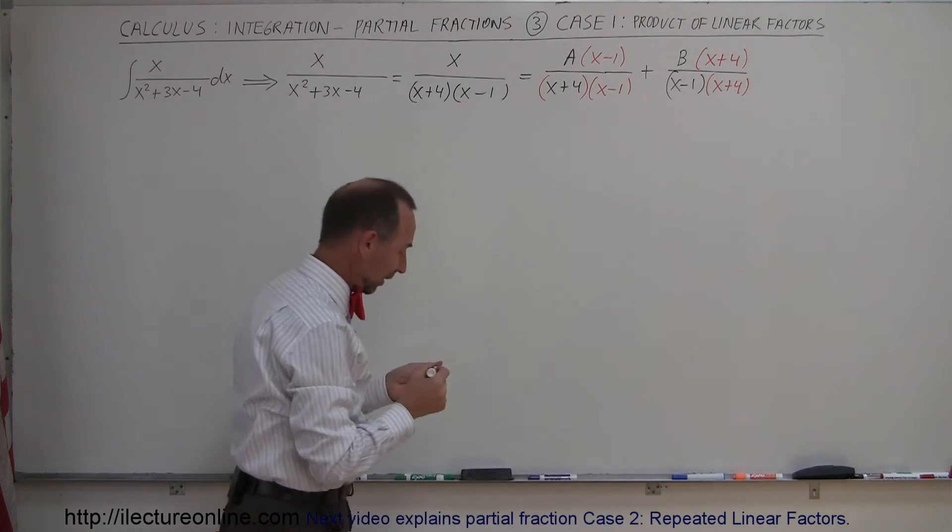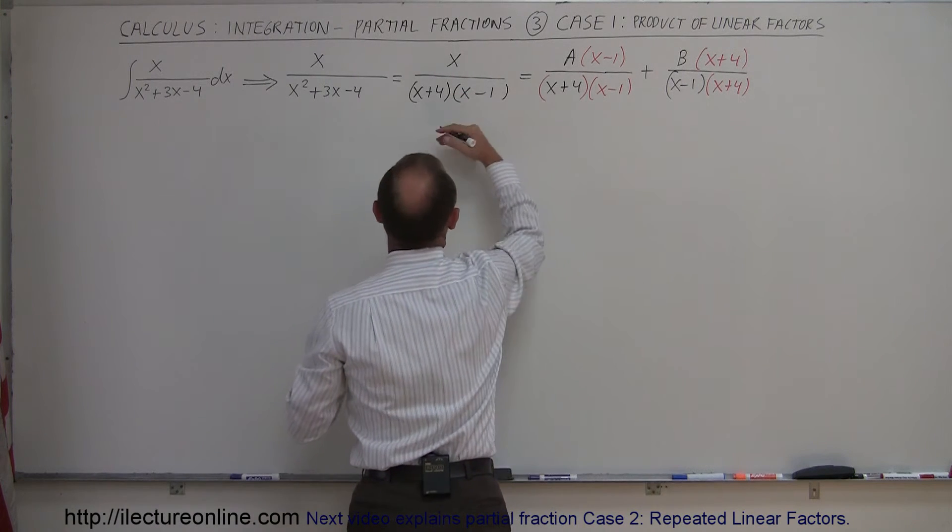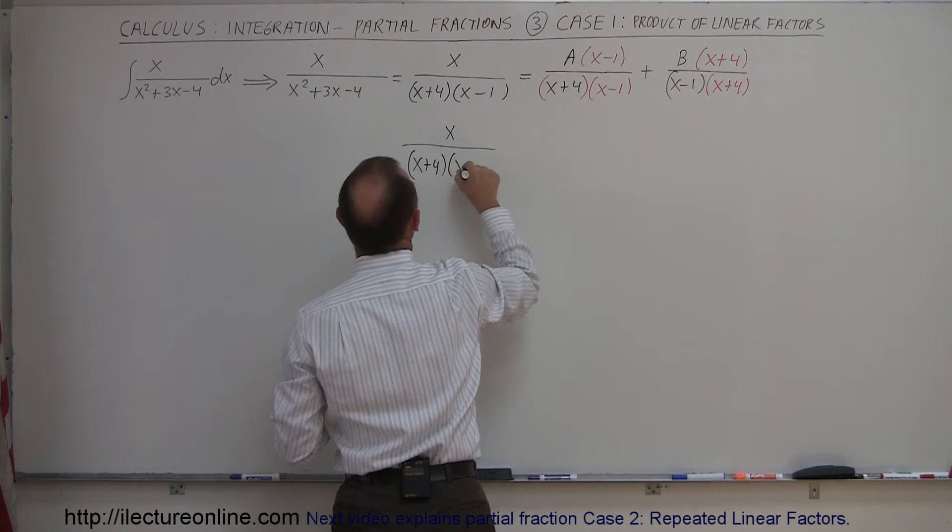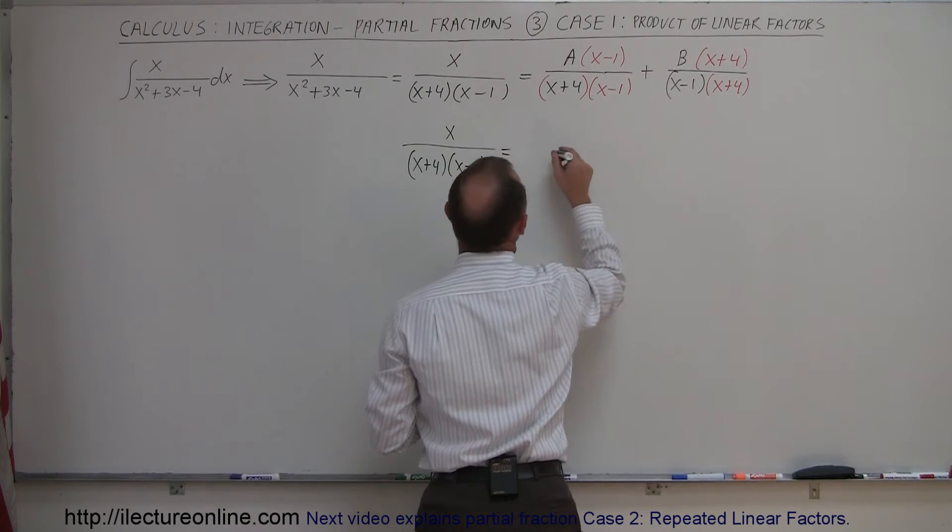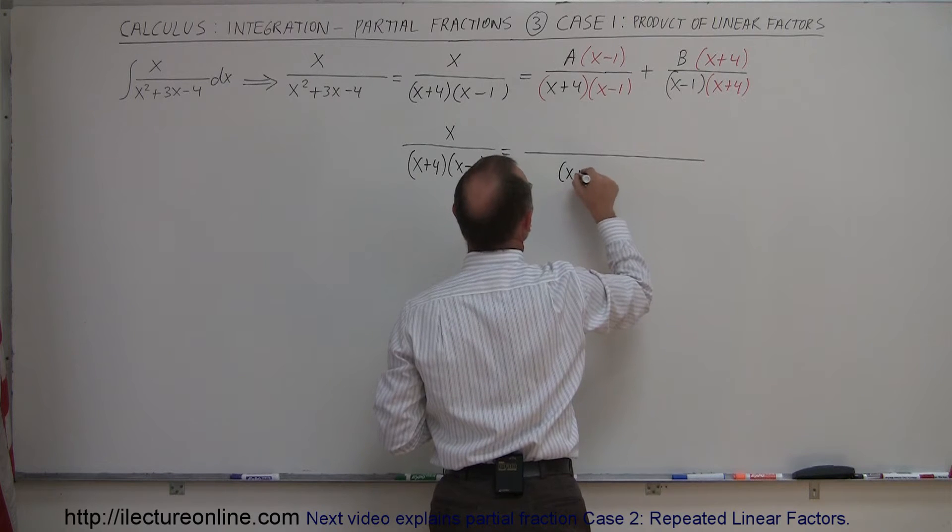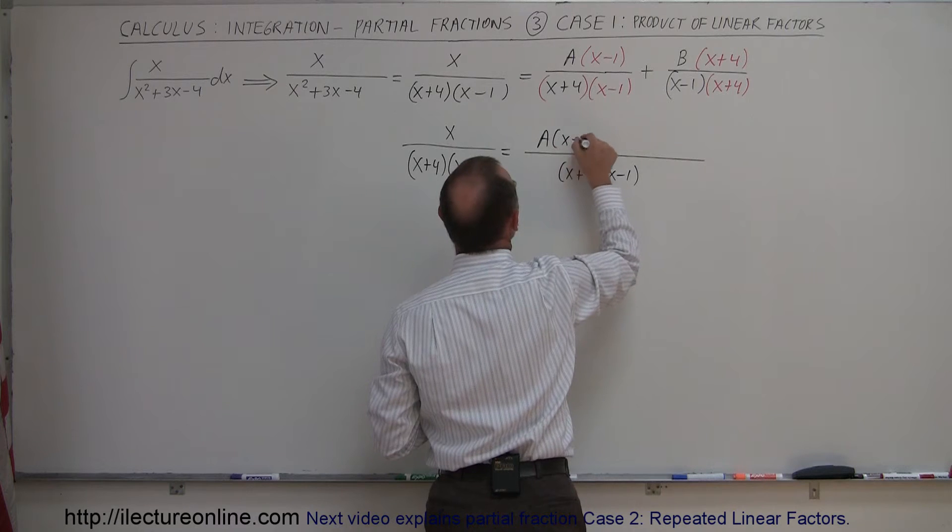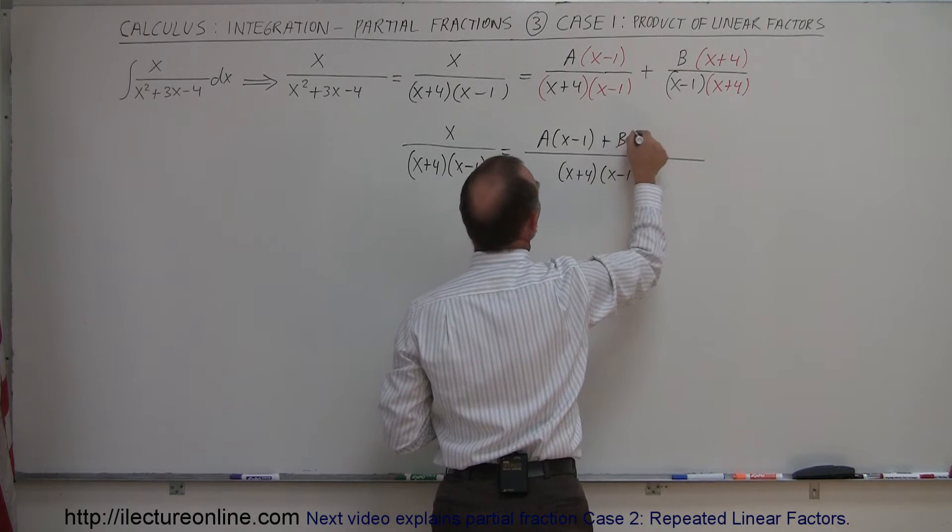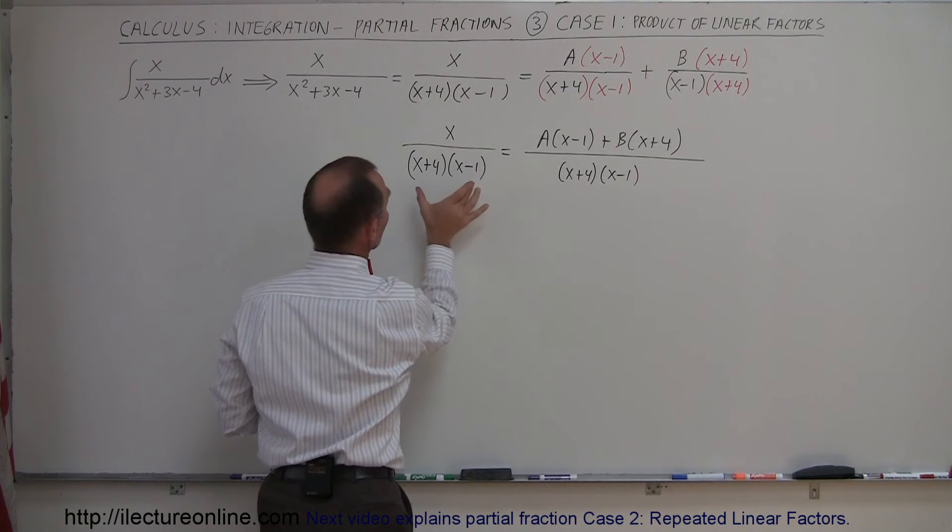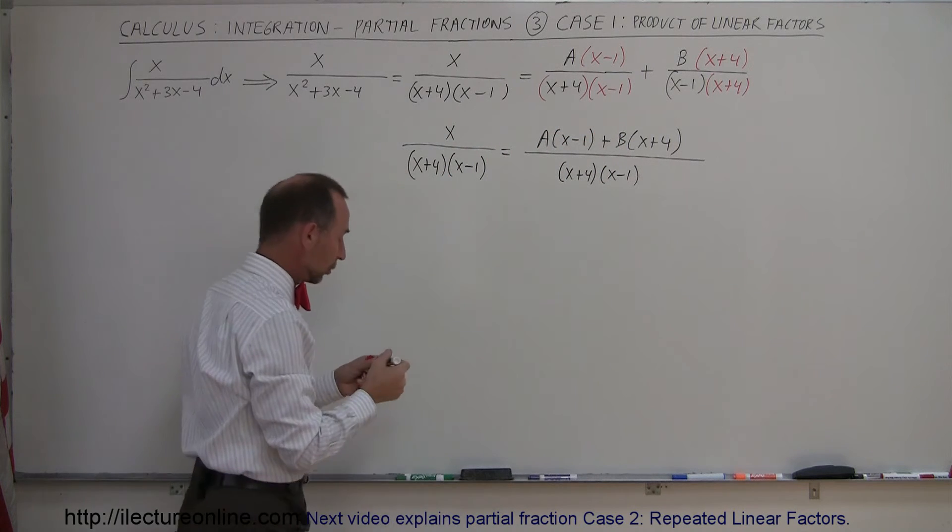So now what I can do is I can write that over the same common denominator. So let me rewrite that. I'm going to bring this down. So x divided by x plus 4 times x minus 1 is equal to. So now since they both have the same denominator and I'm adding, I can write this as x plus 4 times x minus 1 in the numerator, I get a times x minus 1 plus b times x plus 4. Okay, now notice if these are equal to each other and this denominator is equal to that denominator, that means x must be equal to that. So that's the conclusion.